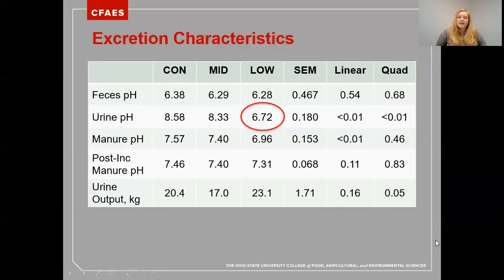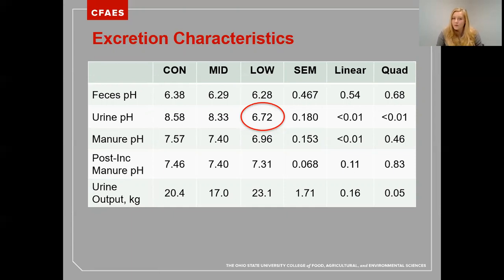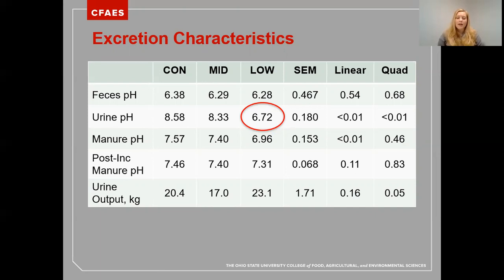Excretion characteristics include feces pH, which was not differing among treatments as expected. Urine pH was successfully decreased from about 8.6 down to 6.72. Keep in mind that this pH was taken immediately before incubation, whereas urine pH at spot sampling before it was frozen and again thawed was at 6.4, so there was a 0.3 pH unit increase. However, that low urine pH was able to reduce the manure pH for the low treatment to below 7, which was going to be ideal for a potential decrease in manure ammonia emissions. After the six-day incubation, however, manure pH was no longer decreased for the low treatment.